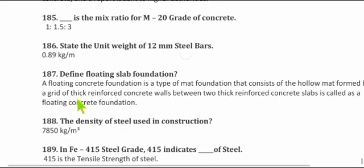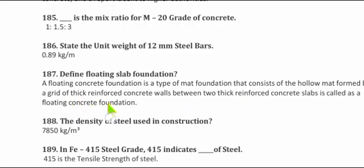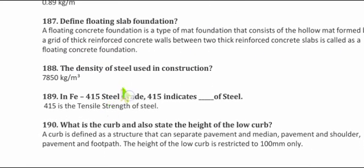Question 185: Define a floating slab foundation. A floating concrete foundation is a type of mat foundation consisting of a hollow mat formed by a grid of thick reinforced concrete walls between two thick reinforced concrete slabs.